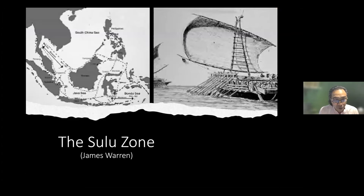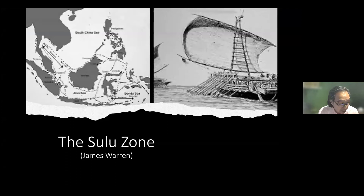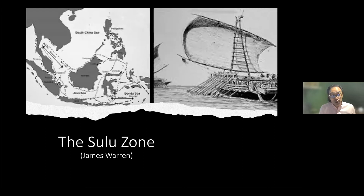A more sophisticated network of slave raiding emanated from Sulu — in particular the Samal Balangagi. Sulu had a very sophisticated network of slave trading, which Southeast Asian historian James Warren describes as the 'Sulu zone.' Their slave raiding network extended across what is now present-day Indonesia and made inroads well into the Visayas and Mindanao even during the Spanish colonial period. For the Sultanate of Sulu, slave raiding was a very lucrative economic activity.